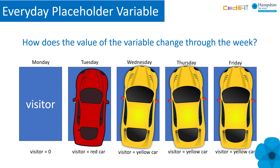We can see that on Monday the value of 'visitor' is nothing — no car is parked on the visitor spot. On Tuesday its value is 'red car', and for the rest of the week its value is 'yellow car'. The value of examining everyday examples of a concept is directly linked to cognitive load. Prior thoughts about a concept significantly lower its cognitive load. Few primary pupils will have thought about placeholders prior to our use of the term, so everyday placeholder examples can be excluded if you wish.